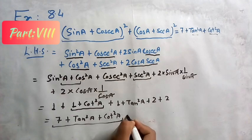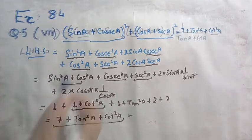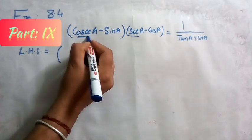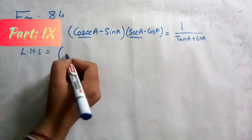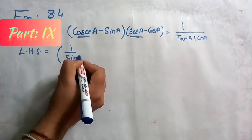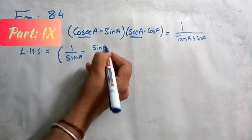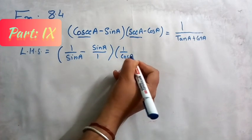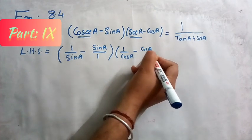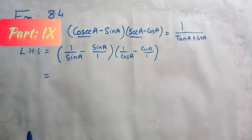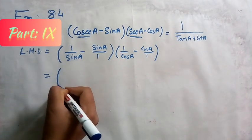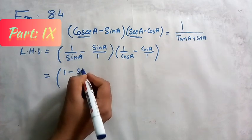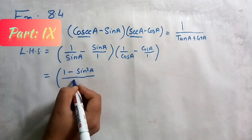Part nine: (cosecA - sinA)(secA - cosA) = 1/(tanA + cotA). Take the left hand side. CosecA = 1/sinA, so the first factor becomes (1/sinA - sinA) = (1 - sin²A)/sinA. SecA = 1/cosA, so the second factor becomes (1/cosA - cosA) = (1 - cos²A)/cosA.